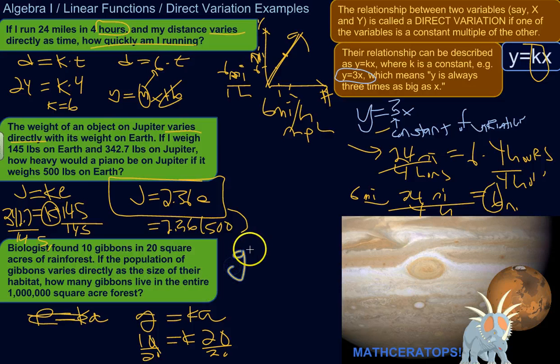So we could say gibbons, the number of gibbons, is 0.5 times the size of the habitat in acres. Now, I don't know if this is actually realistic for gibbons.